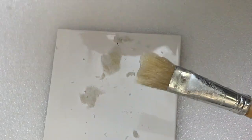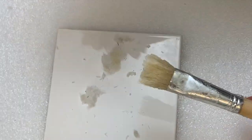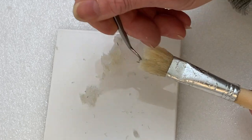But if you want to clean it up more, you can use something like this and just run it through the bristles, pulling it like that, and then you will pull out more glue.